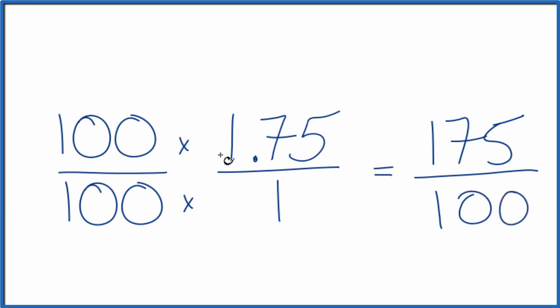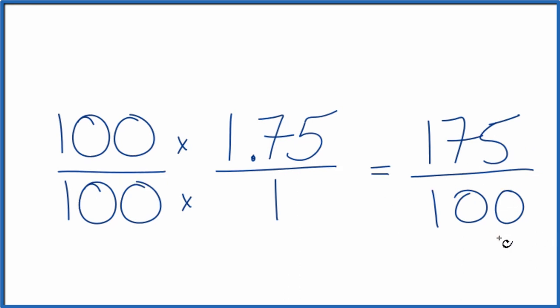So the decimal 1.75, we've simplified it to this improper fraction, 175 over 100. And it's an improper fraction because the numerator is larger than the denominator.